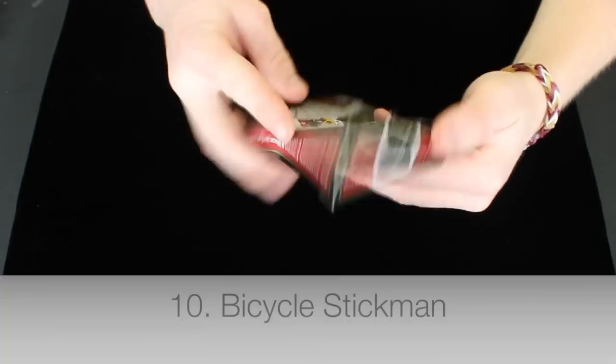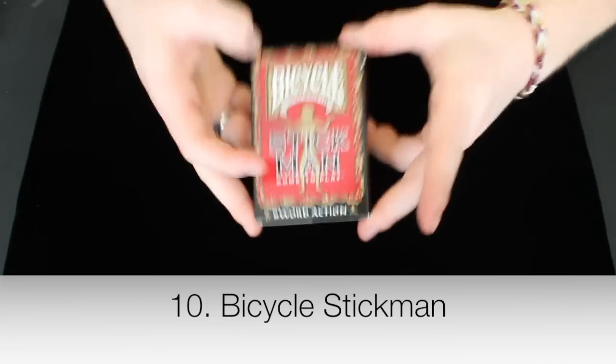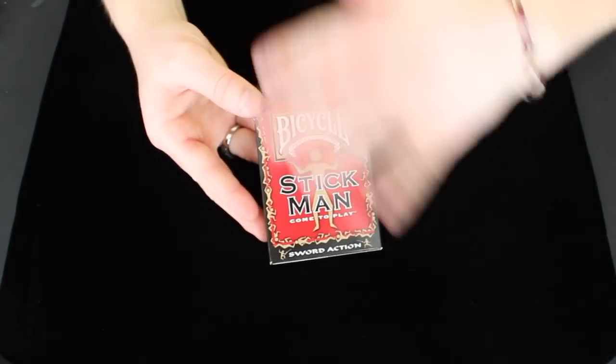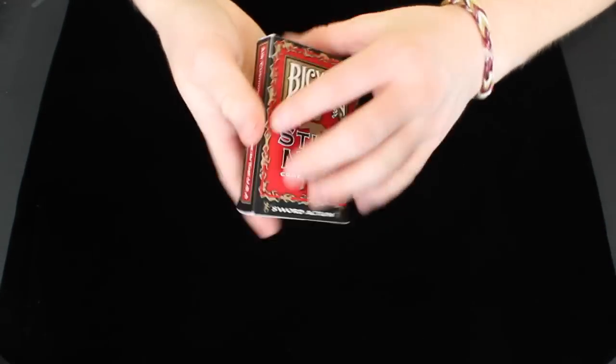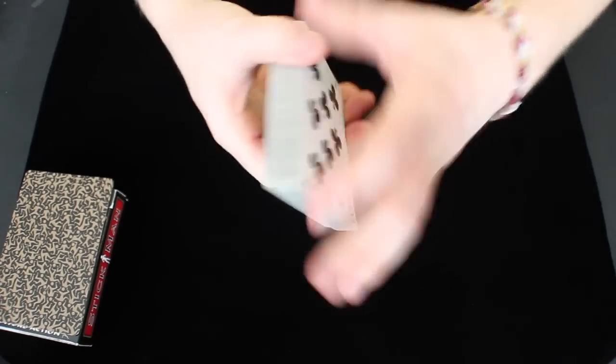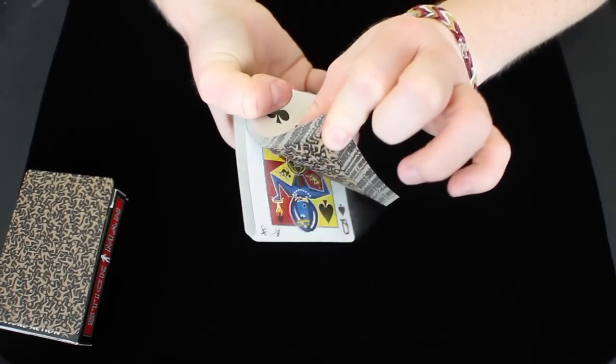At number 10 we have the Stickman deck from Bicycle. I really like this deck of cards mainly because it handles so well over time. It has a really cool theme and the tuck box looks very nice. And this deck is actually animated so that the little sword guys on the sides of the cards, they actually have a little sword fight. It is very cool.